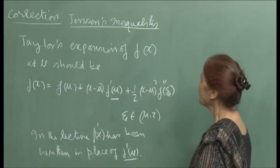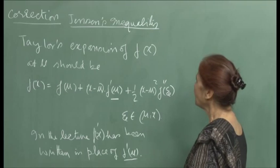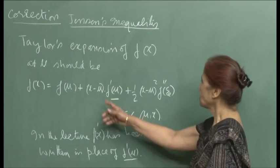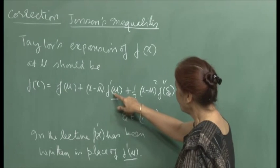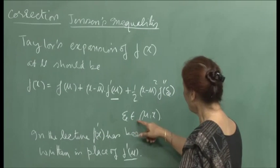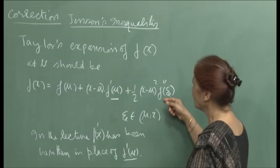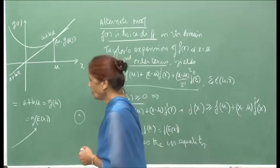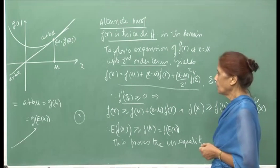A correction to the alternate proof: in the Taylor expansion at μ, it should read f'(μ) instead of f'(x). The correct expansion is f(x) = f(μ) + (x − μ)f'(μ) + (1/2)(x − μ)²f''(ψ), where ψ is some number between μ and x as guaranteed by Taylor's theorem. We are taking a second-order expansion of f at μ, so f prime should be evaluated at μ.